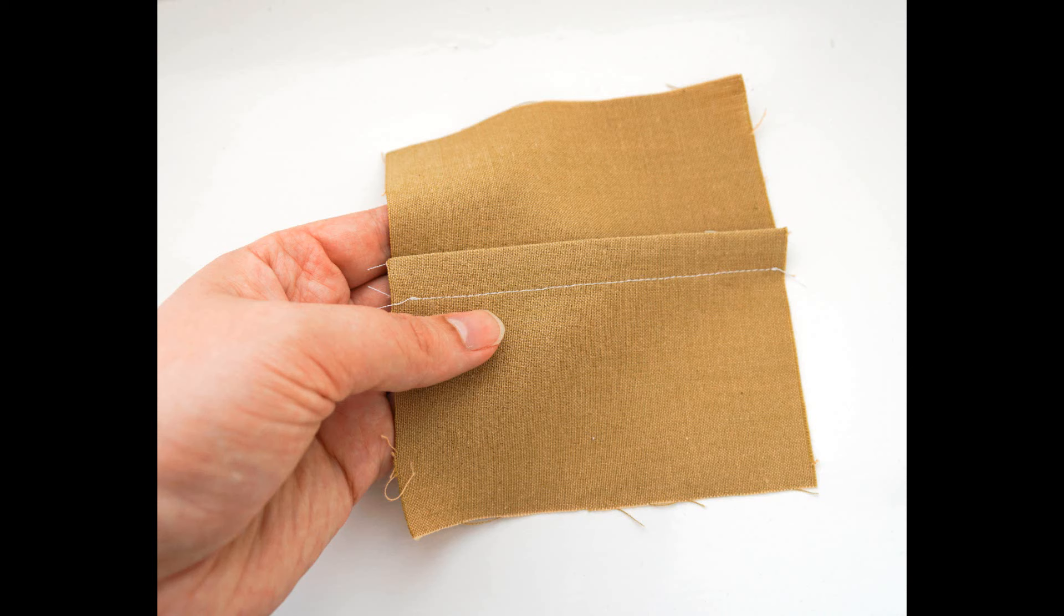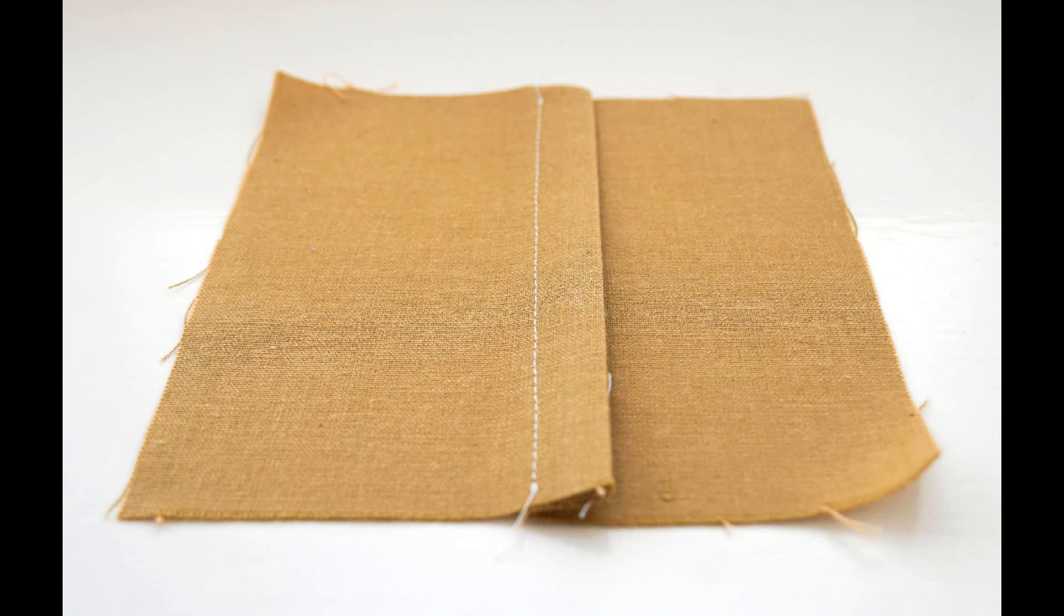The basic concept is that you sew the seam twice in order to neatly conceal any raw edges from view on the wrong side of the fabric. So basically it's a seam that looks neat on both sides.